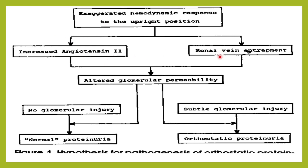There could be renal vein compression and increased glomerular permeability. There could be no glomerular injury — so we consider it a normal variant — or there could be very minimal glomerular injury, which can also happen in case of orthostatic proteinuria.